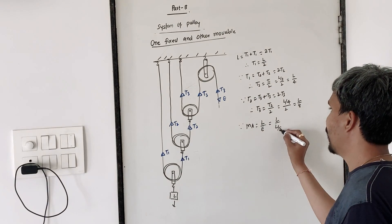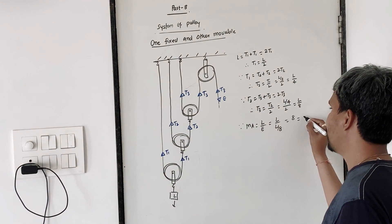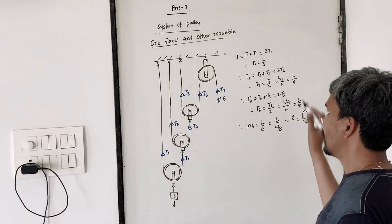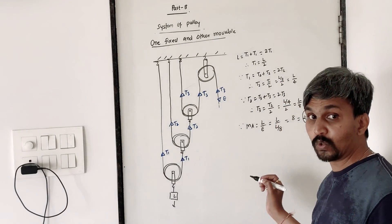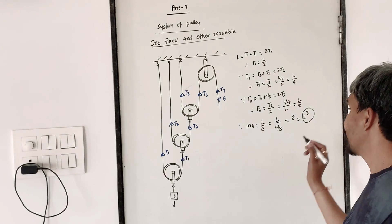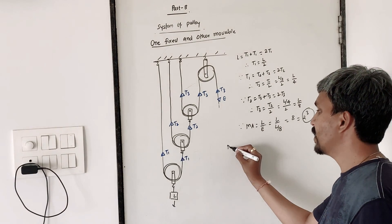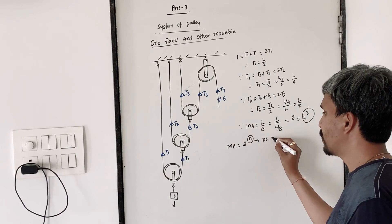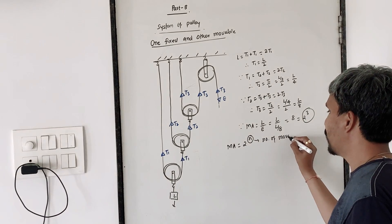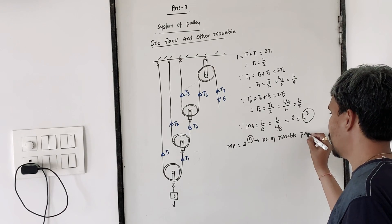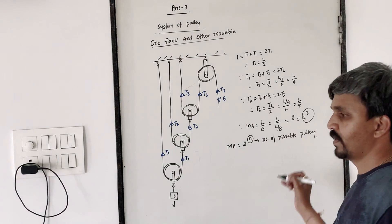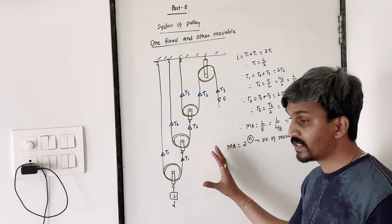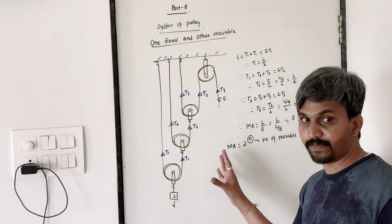8 can be written as 2 raised to 3. So the conclusion is: mechanical advantage is equal to 2 raised to n, where n is the number of movable pulleys. This is very important — this is the last part of Chapter 3B.